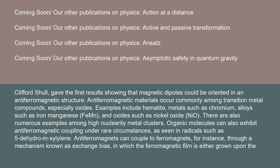Antiferromagnetic materials occur commonly among transition metal compounds, especially oxides. Examples include hematite, metals such as chromium, alloys such as iron manganese and FeMn, and oxides such as nickel oxide (NiO). There are also numerous examples among high-nuclearity metal clusters. Organic molecules can also exhibit antiferromagnetic coupling under rare circumstances, as seen in radicals such as 5-dehydro-m-xylylene.